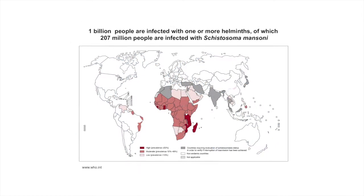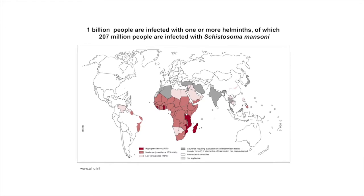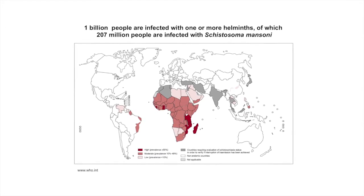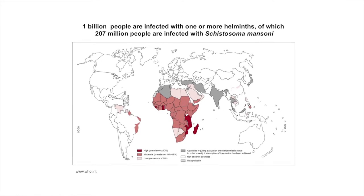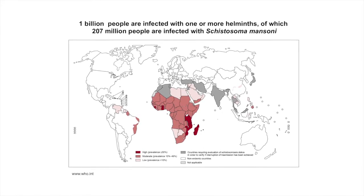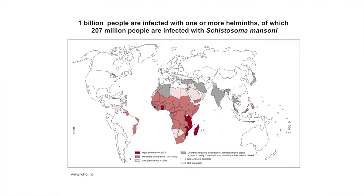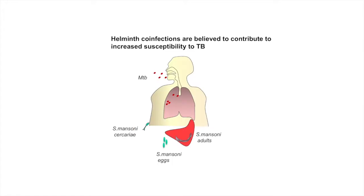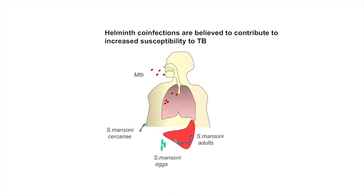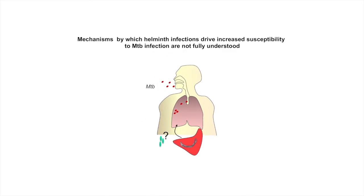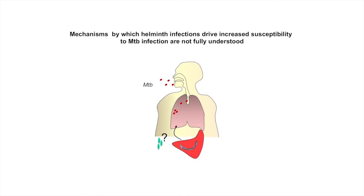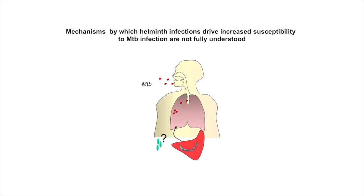The geographical areas where TB is endemic overlaps with geographical areas where helminth worms are prevalent. One billion people are infected with one or more helminths, of which 207 million people at least are infected with Schistosoma mansoni. Helminth co-infections are believed to contribute to increased susceptibility to tuberculosis. However, the mechanisms by which helminth infections drive increased susceptibility to tuberculosis are not fully understood.